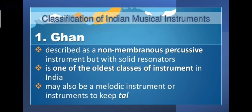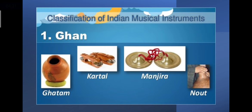The classification of Indian musical instruments: First is Ghana — it is described as a non-membranous percussive instrument with solid resonators. It is one of the oldest classes of instruments in India and may also be a melodic instrument or an instrument to keep tala. The following are examples of instruments in the Ghana classification.